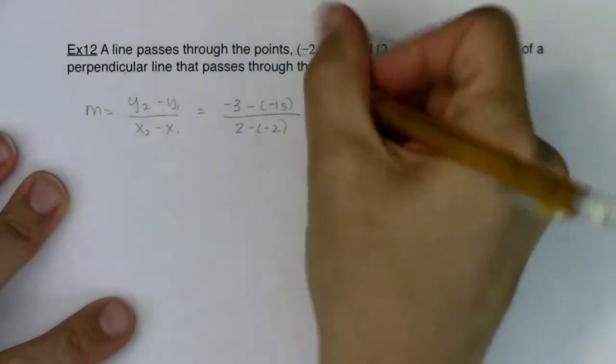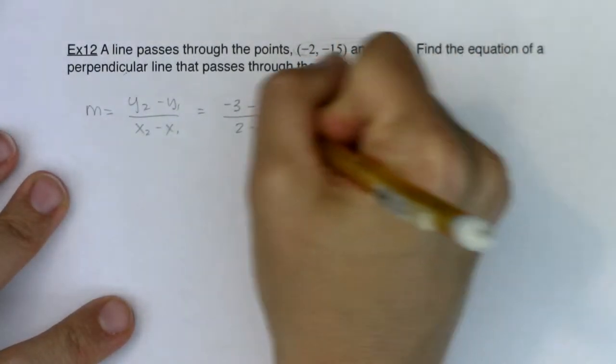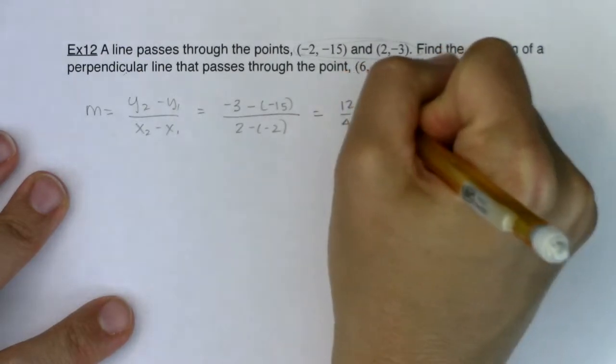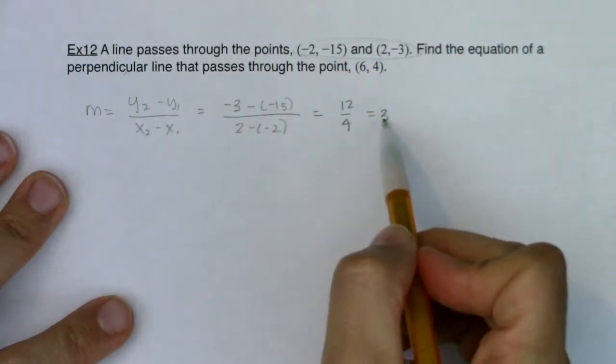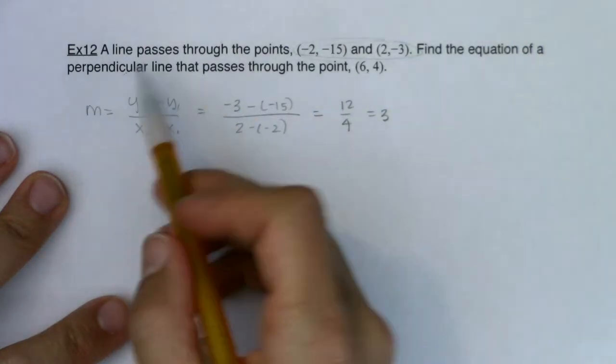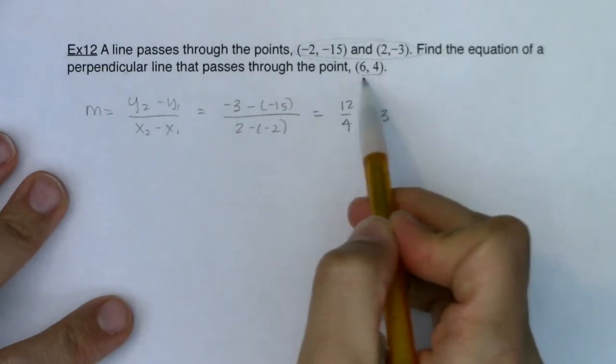As I'm looking at that, we have (-3) plus 15, that would be 12. This would be 12 over 4, that would be 3. So there's the slope of my given line, and it says find the equation of a perpendicular line passing through the point (6, 4).